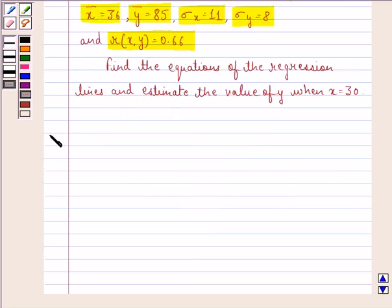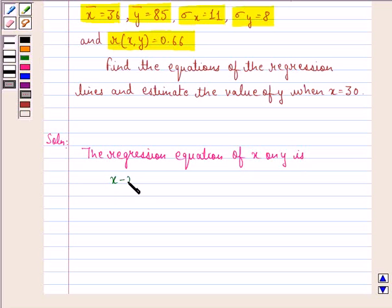Let us start with the solution to this question. We see that the regression equation of x on y is given by x minus x bar is equal to r into sigma x divided by sigma y into y minus y bar.